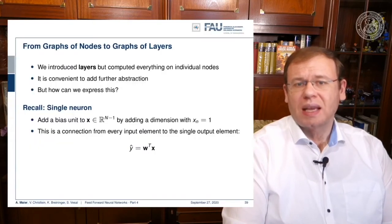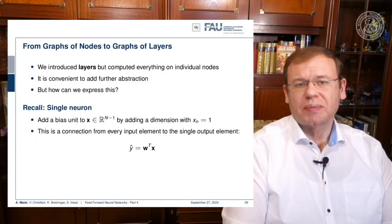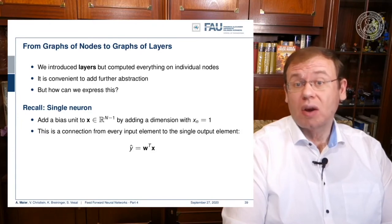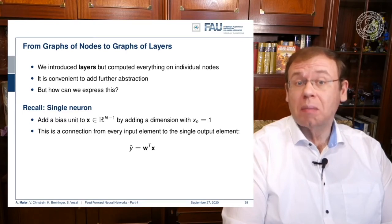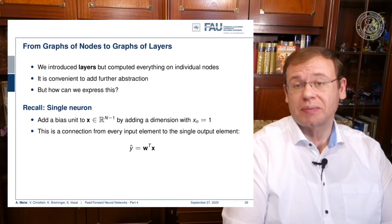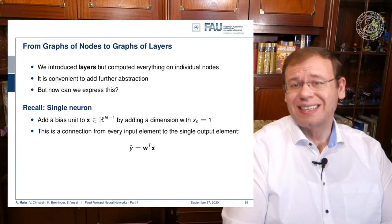We are building on abstractions such as matrix multiplications. Let's recall what our single neuron is doing — it essentially computes an inner product of its weights. We are skipping over the bias in this notation by expanding our vector with an additional one element. This allows us to describe the bias and the inner product simply as shown on the slide. The output y-hat is just an inner product.